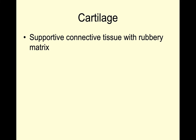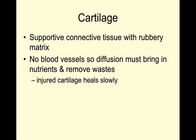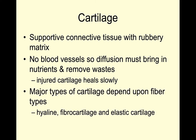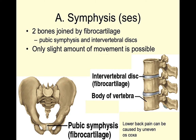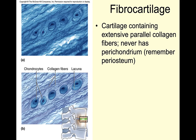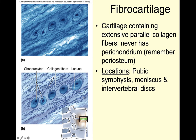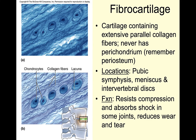This offers a little bit more flexibility. Cartilage is a connective tissue with a rubbery matrix. It does not have blood vessels — it relies on diffusion. So nutrients and wastes move much slower, and when your cartilage is damaged, it takes a little bit longer to heal. As a recap, two bones are joined with fibrocartilage and there is only a slight amount of movement. Fibrocartilage has extensive parallel collagen fibers, and we can see this highlighting a lot of these collagen fiber bundles. We find this in the pubic symphysis, meniscus, or intervertebral discs. It's resisting compression, absorbing shock, and reducing wear and tear.